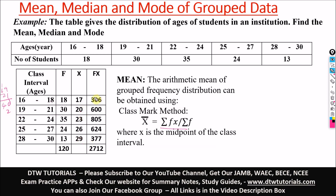Next you calculate f times x by multiplying each frequency by its corresponding x value. The summation of all f times x values and the summation of your frequencies give you the totals. To get your mean you divide summation of f times x by summation of f, and you get 22.6. The unit is in years — always include your unit of measurement.